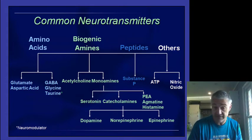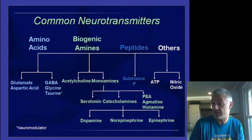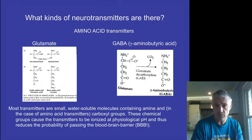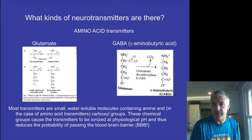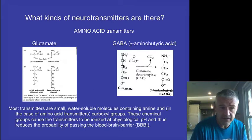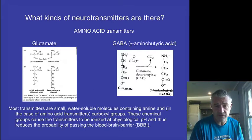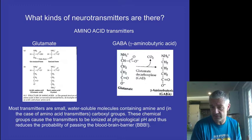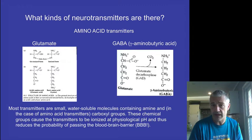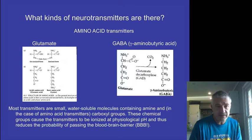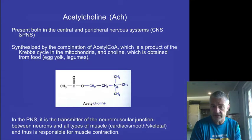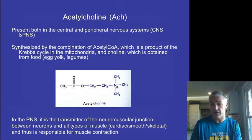There are also gaseous ones like nitric oxide, for example. These slides show you some of these amino acid-based ones — glutamic acid versus glutamate and how it gets converted to GABA, one of the more common neurotransmitters you'll see in the brain. Acetylcholine is shown here as well — in the peripheral nervous system, all those neuromuscular junctions — and we also see it in the autonomic nervous system quite a bit.